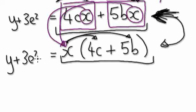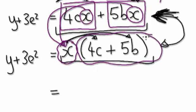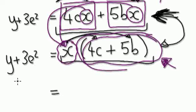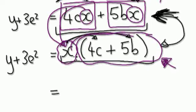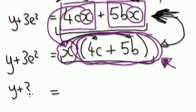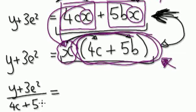So you're at y plus 3e squared. Visualize it as this bubble — at the moment you've got x times this bubble here. To kill off this bubble, just divide both sides by the brackets — by this long bubble here. So inside your mind, divide both sides by the brackets. It would be: y plus 3e squared over 4c plus 5b, equals x.